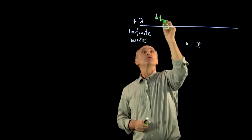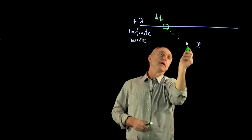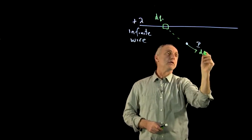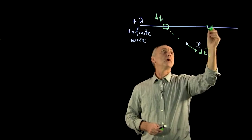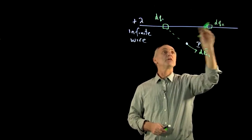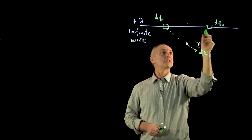I can take an element to the wire, and I get dE1. And because the wire is infinite, there always will be another pair, another element, dQ2, exactly equidistant from the perpendicular bisector.